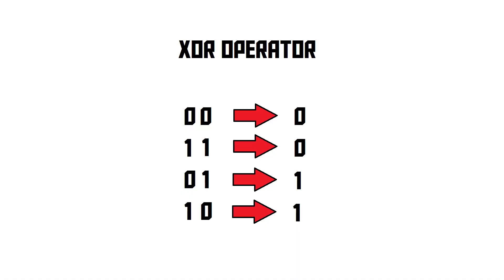What the algorithm does to actually encrypt the data is it uses the so-called XOR operator. The XOR operator works by taking two bits and comparing them. If two bits are both 0, the outcome of the XOR operator will be 0. If the two bits are both 1, the XOR operator will also output a 0. Only if one of the bits is a 1 and one of them is a 0 — and it doesn't matter in which order — then the XOR operator will actually output a 1.